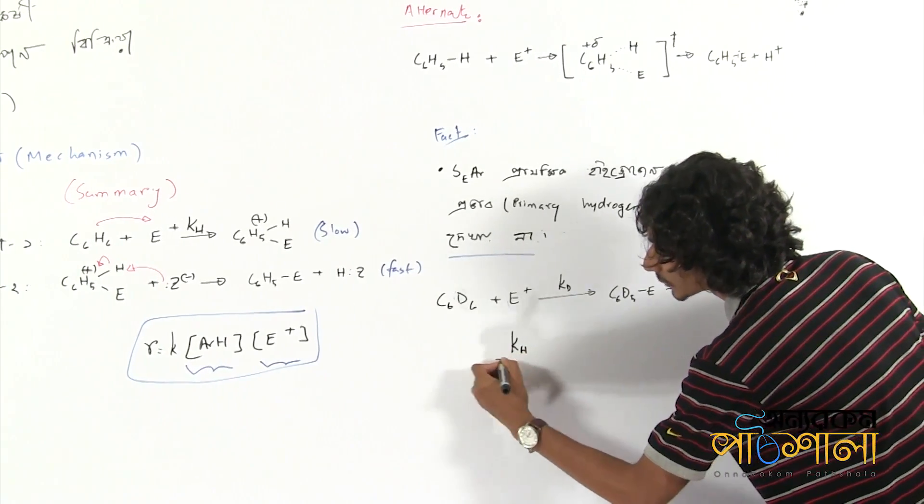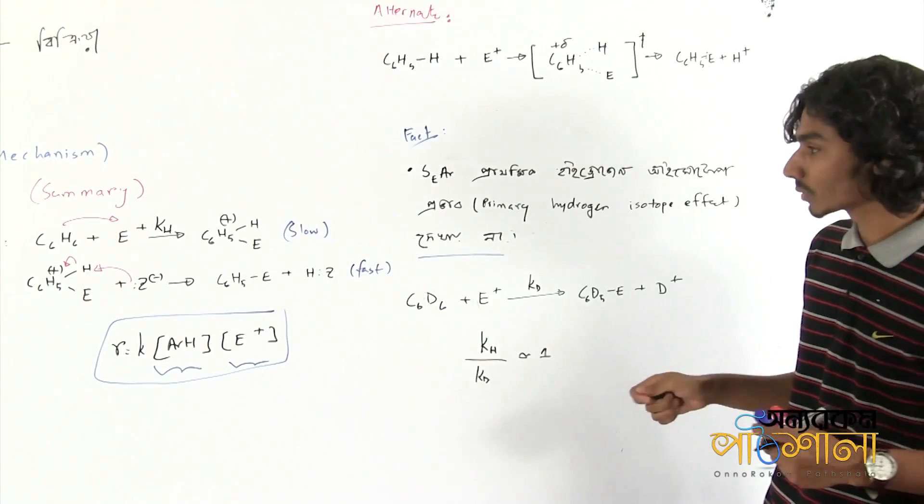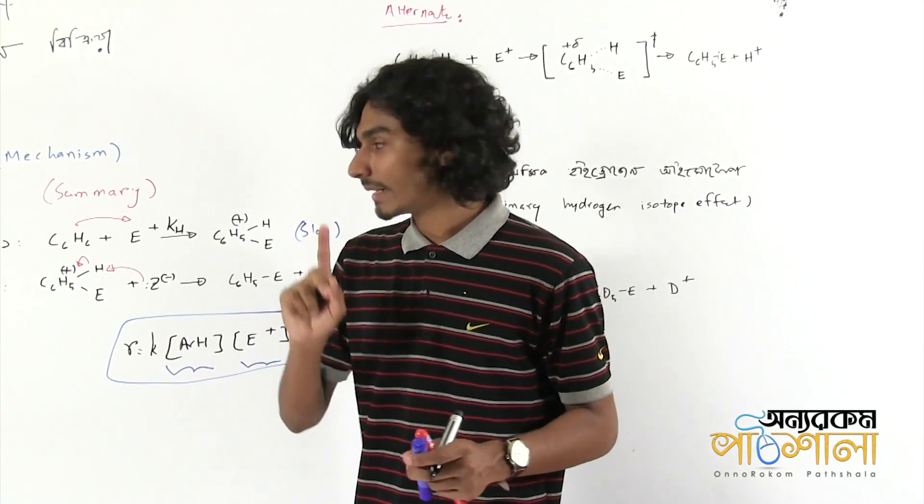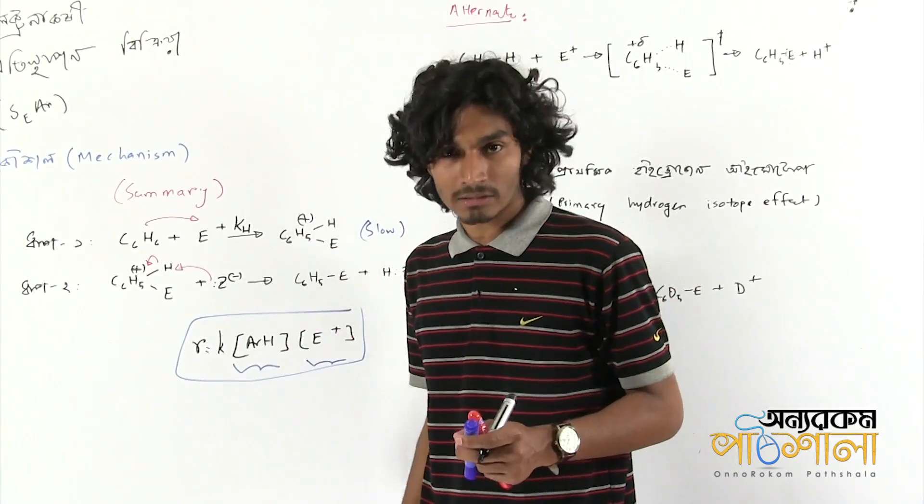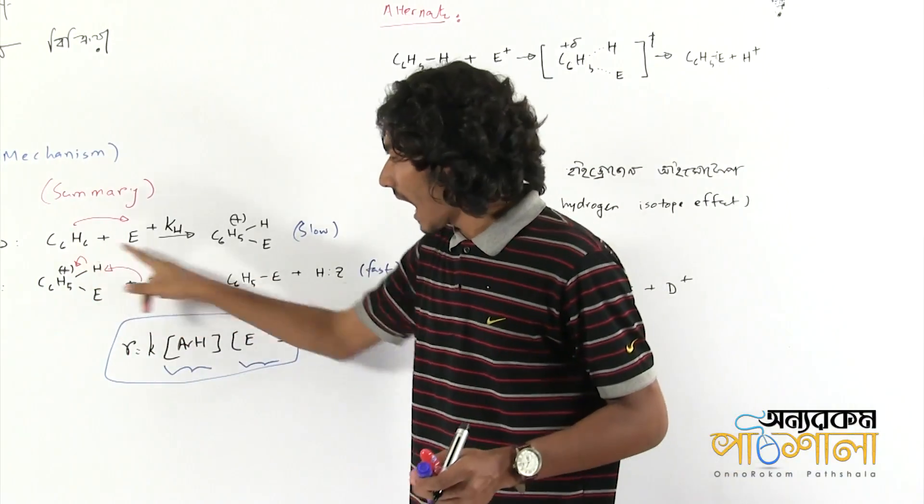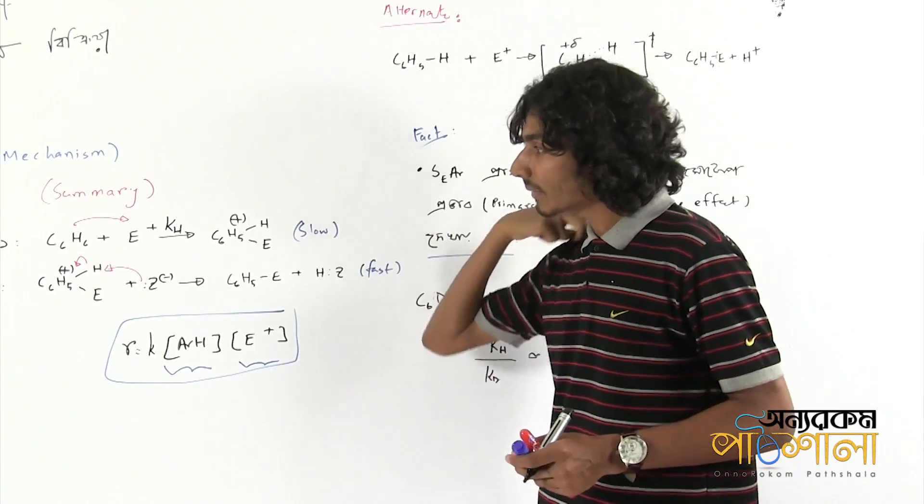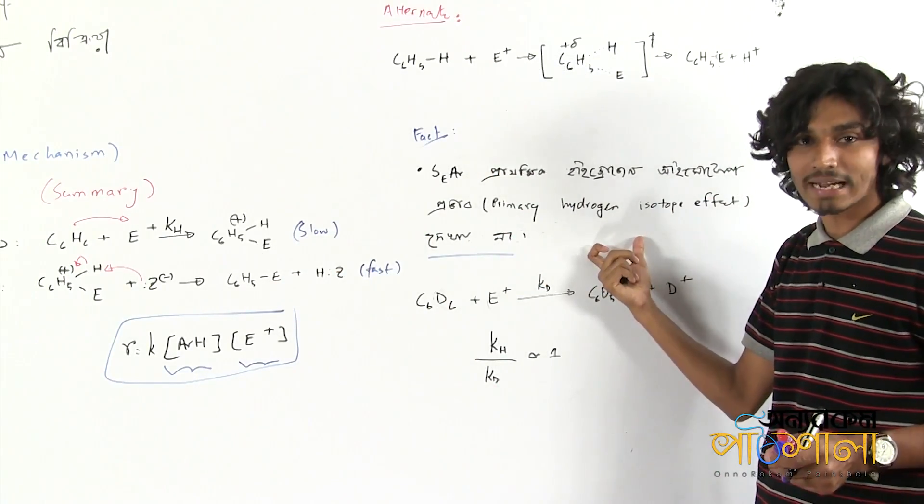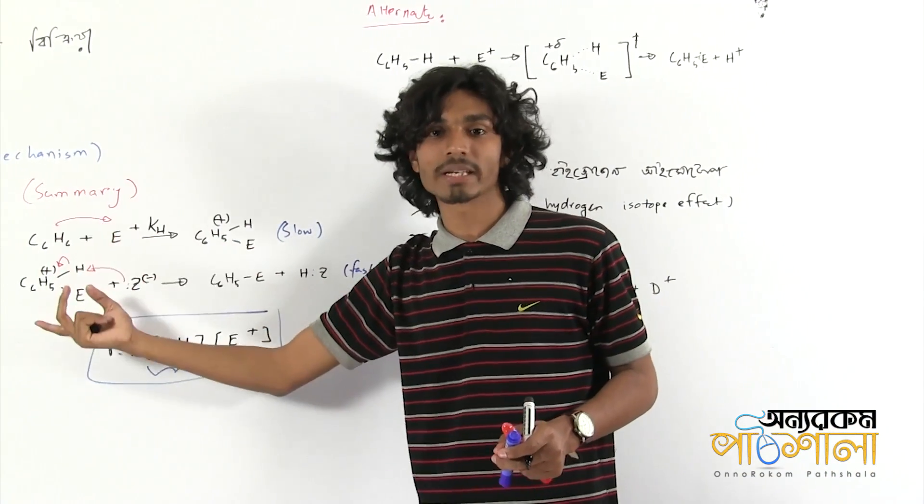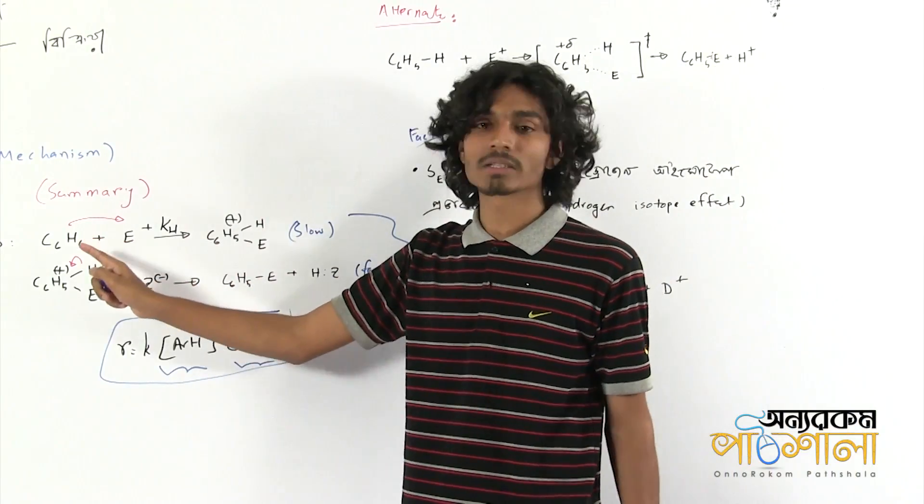When k_h and k_d are almost similar, meaning whether we substitute hydrogen or deuterium, there is no difference in the rate. This indicates that breaking the carbon-hydrogen or carbon-deuterium bond is not involved in the rate-determining step.